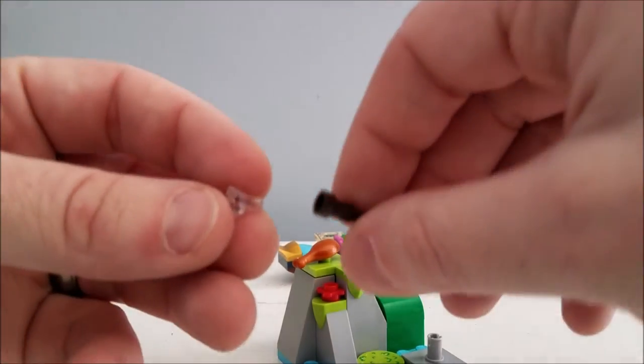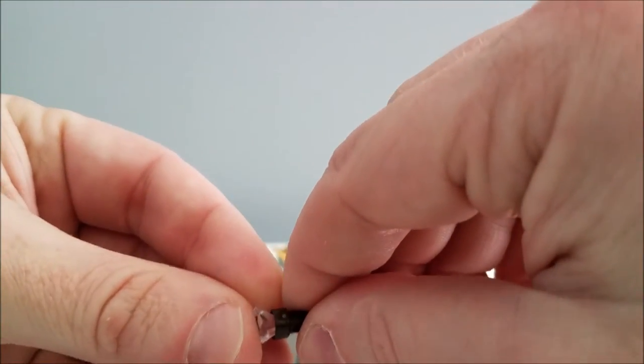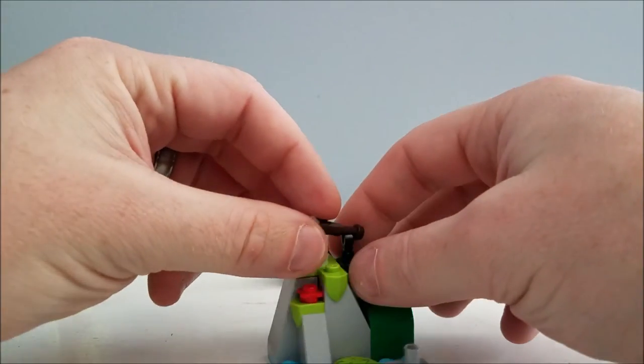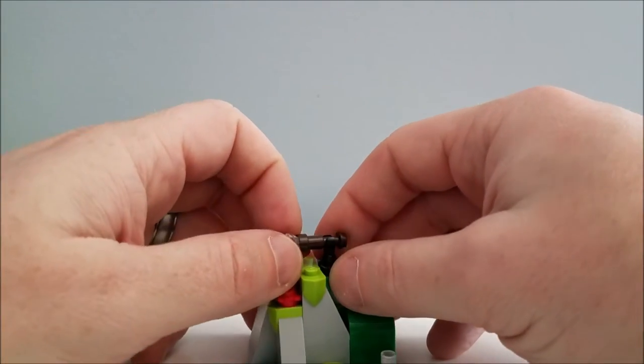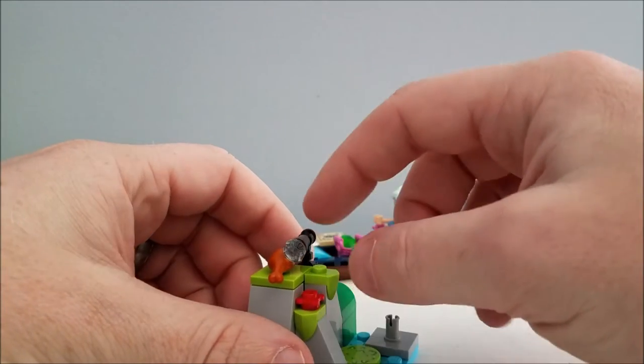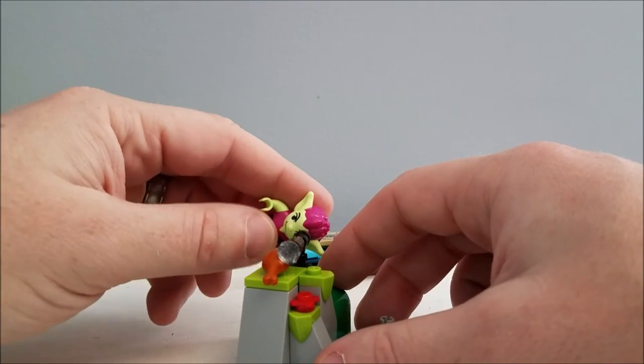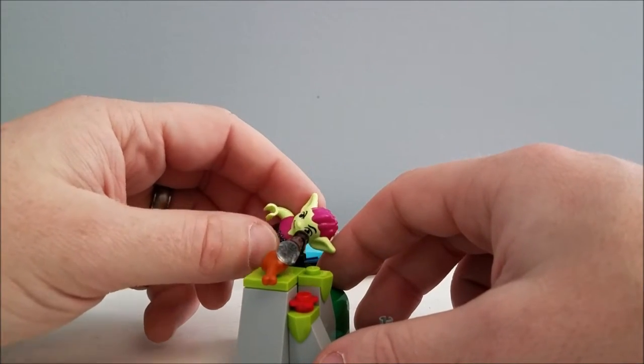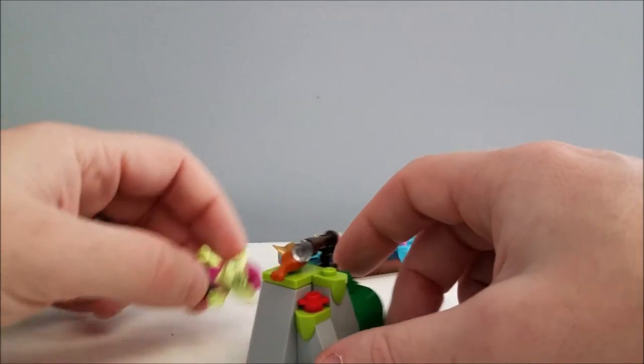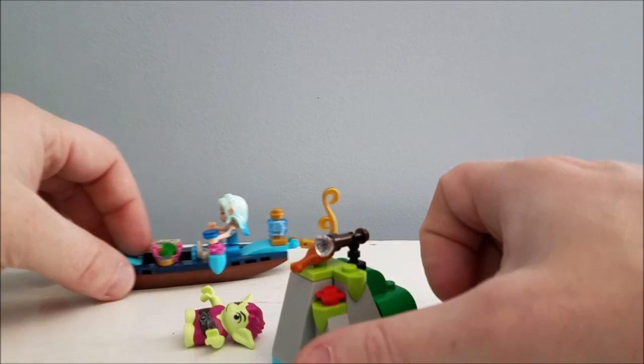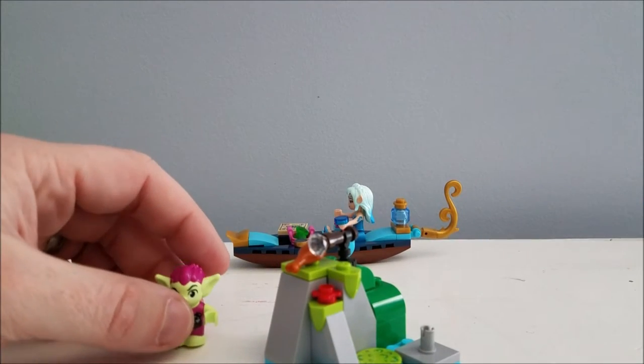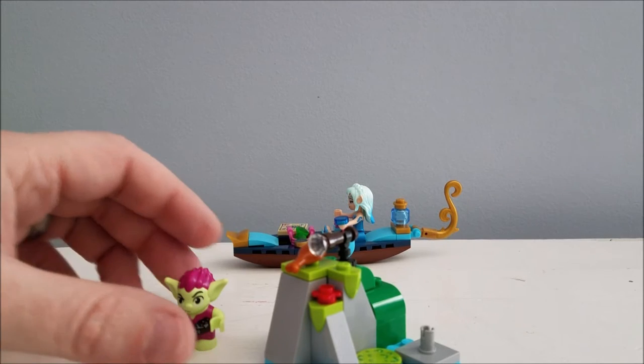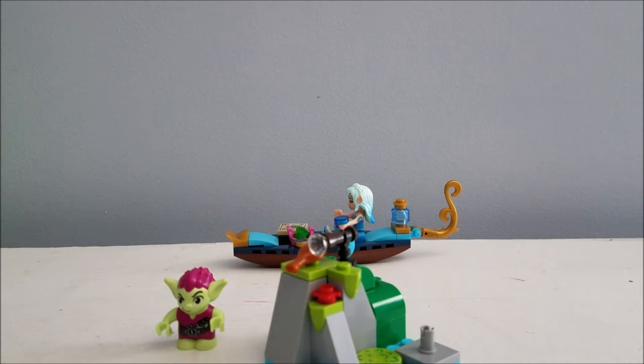So now we're going to build - oh this looks like it's going to be a little telescope for him to see. Oh that's pretty cool. See now he can look through here. Hello hello, I see a boat coming! Actually the boat's behind you. Get your eyes checked!